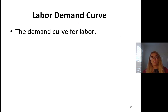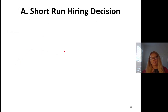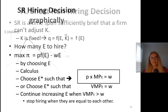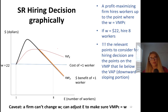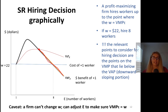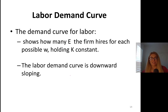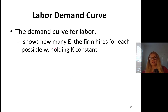The demand curve for labor comes from — remember in the previous part — it comes from the value marginal product curve. It is the downward-sloping portion of the value marginal product curve that lies below the intersection of the value average product and value marginal product curves. So it's this part right here — this is the labor demand curve.